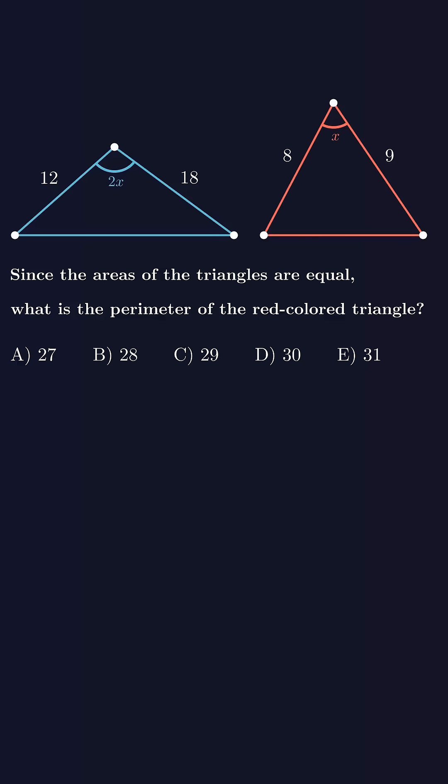One way to calculate the area of a triangle is by using the sine formula. Area equals one half times two side lengths multiplied by the sine of the angle between them. In our case, if you simplify the numbers, it becomes three times sine of 2x equals sine of x.